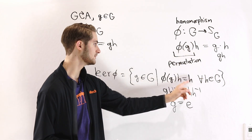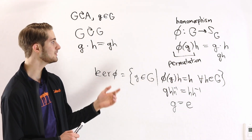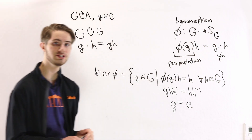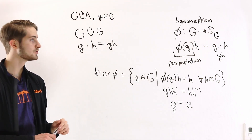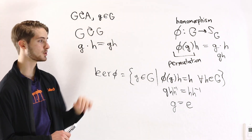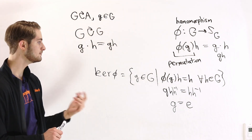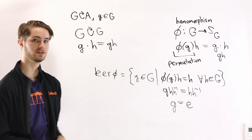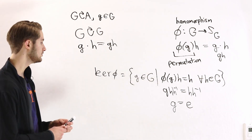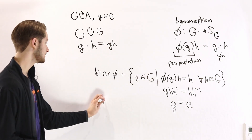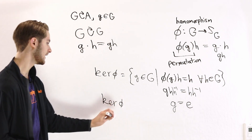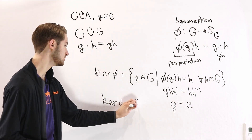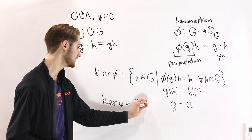We know by definition that φ(g)(h) = gh. For this to be the identity permutation we must have gh = h, which means g is the identity. The conclusion is that the kernel of φ has only one possible element: just the identity.